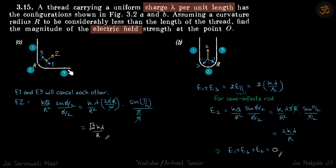We are given wires which have linear charge density of lambda. We need to find the electric field at the centers. So let's break this wire into three parts: 1, 2, and 3.